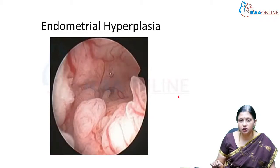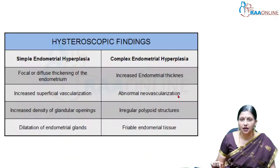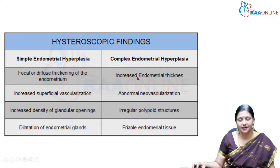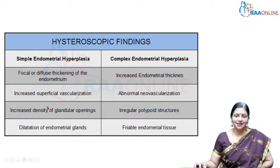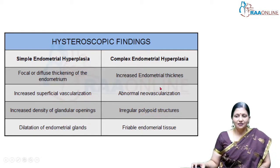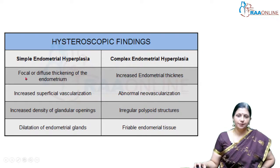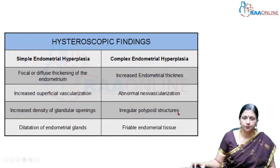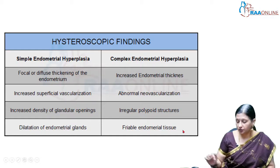This is a hysteroscopic picture of endometrial hyperplasia. Hysteroscopically it can be simple or complex. In simple endometrial hyperplasia there is focal or diffuse thickening of the endometrium, increased superficial vascularization, increased density of glandular openings, and dilated endometrial glands. In complex endometrial hyperplasia there is increased endometrial thickness throughout, abnormal neovascularization, irregular polypoid structures, and friable or necrotic endometrial tissue.